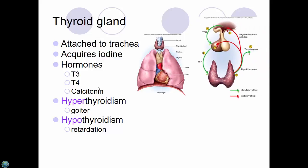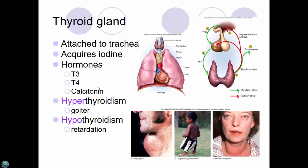This is the negative feedback loop — you don't need to know this diagram in detail; it's more physiology. Here's a goiter example — the woman has buggy eyes indicating hyperthyroidism, and this man also has it.